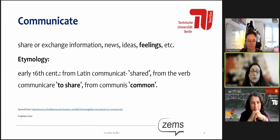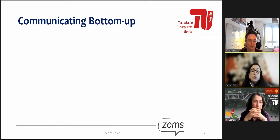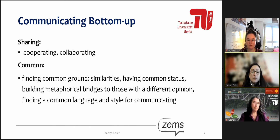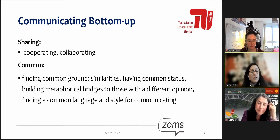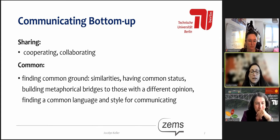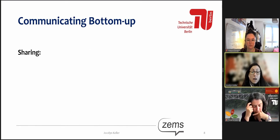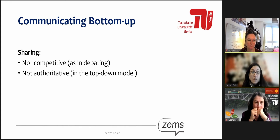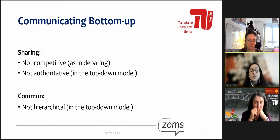Also important are the words 'to share' and 'common,' which come from the etymology of 'communicate.' When communicating bottom-up, sharing means cooperating and collaborating, and 'common' means finding common ground — similarities, common status whether socially, economically, etc. — building metaphorical bridges to those with a different opinion, and finding a common language and style for communicating. When communicating bottom-up, sharing is not competitive as in debating, and it is not authoritative as in the top-down model. Similarly, 'common' is not hierarchical as in the top-down model. This is extremely important.